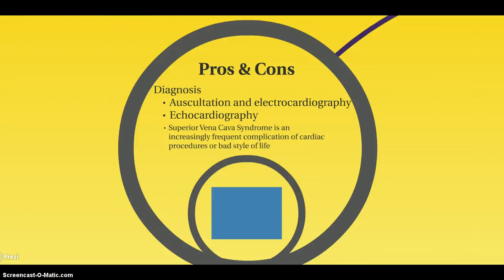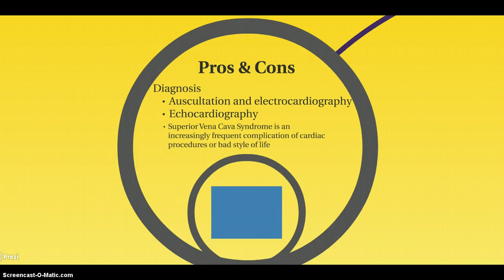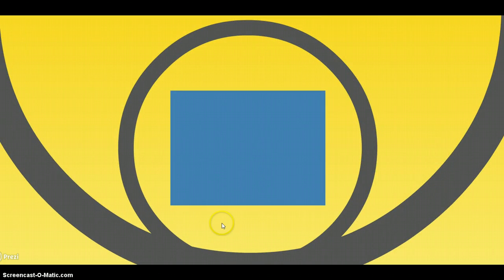Pros and cons. Diagnosis: auscultation, electrocardiography, echocardiography. Superior vena cava syndrome is an increasingly frequent complication of catheter placements. So we have the next video.